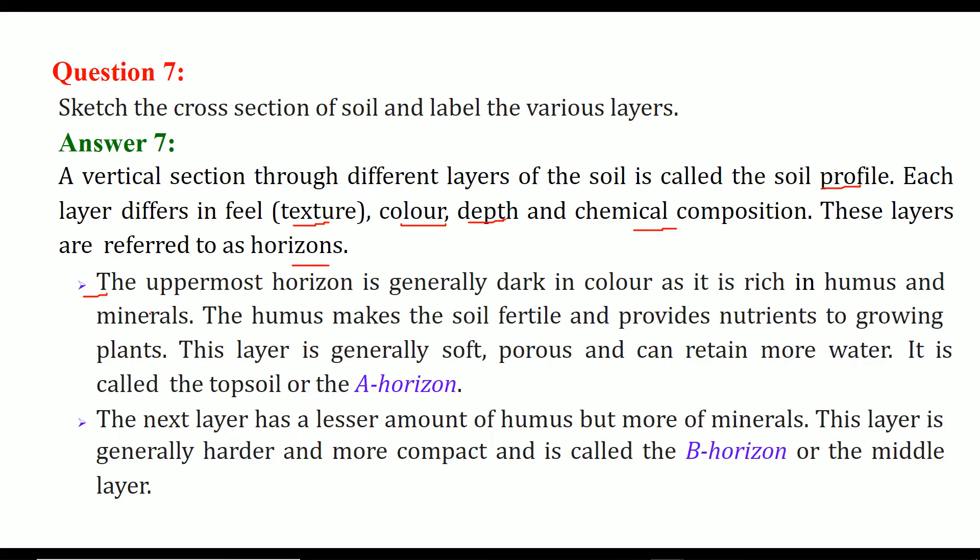So first is the uppermost layer which you just saw is generally dark in color because it has huge amount of organic matter humus and also it contains minerals. The humus makes the soil fertile and it provides nutrients to growing plants and the layer is generally soft and porous and this can retain some more water and since this is a top side we call it as top soil or the A horizon.